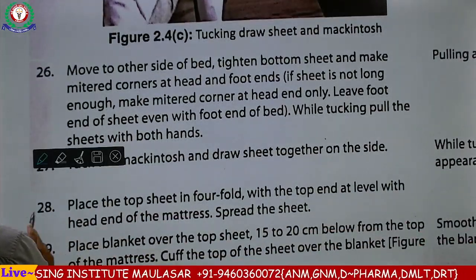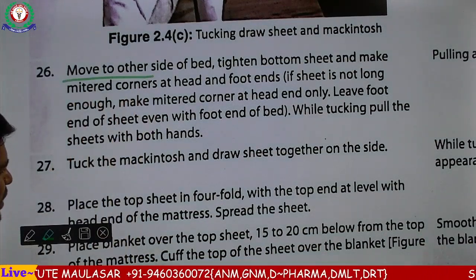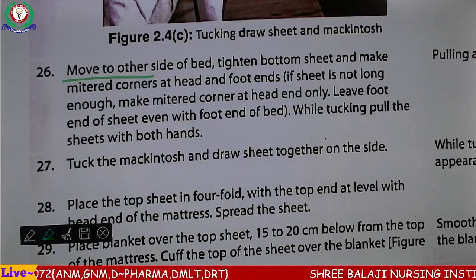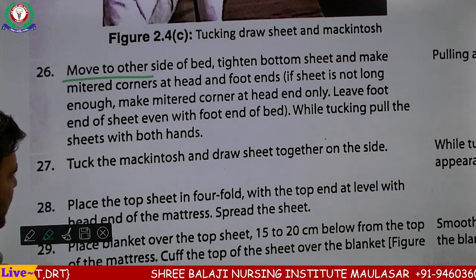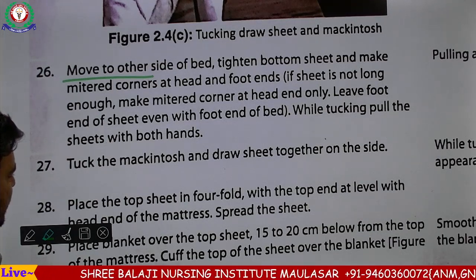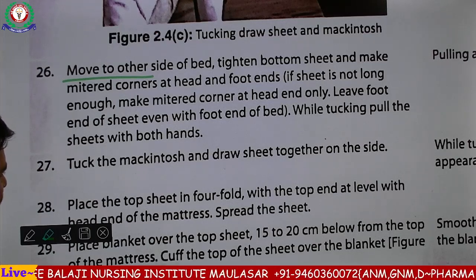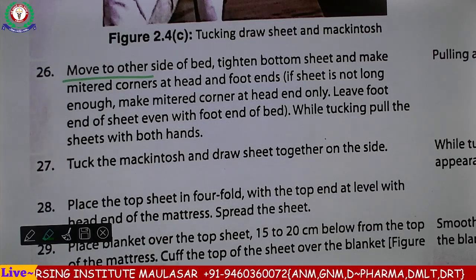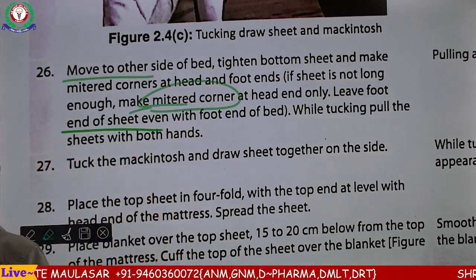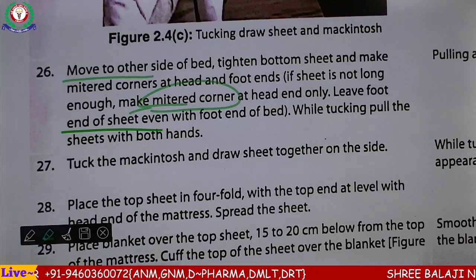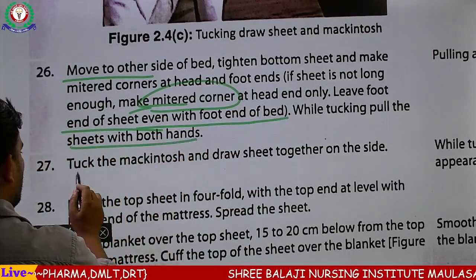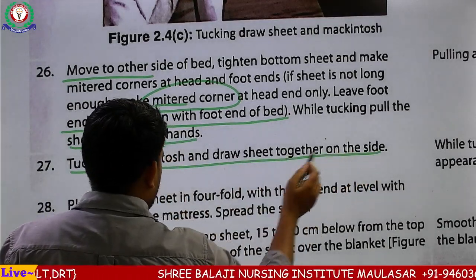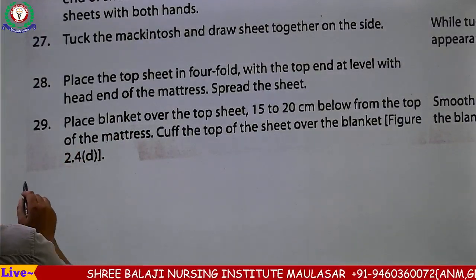Move to other side of the bed — tight bottom sheet। बिस्तर की दूसरी तरफ जाएं और नीचे की चादर को कस लें। Make the mitered corners at the head and foot end — make the mitered corner at head end only, leave foot end। Head की side में mitered corner बना देंगे, पेर की side में छोड़ देंगे। While tucking pull the sheet with both hands — tuck the mackintosh and draw sheet together at the bedside — दूसरी side से भी mackintosh वगैरा को tuck कर देंगे।